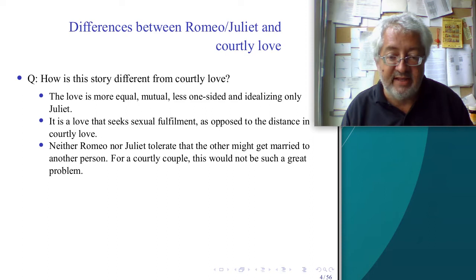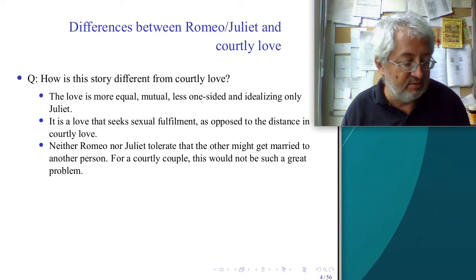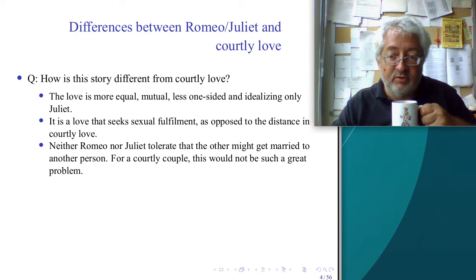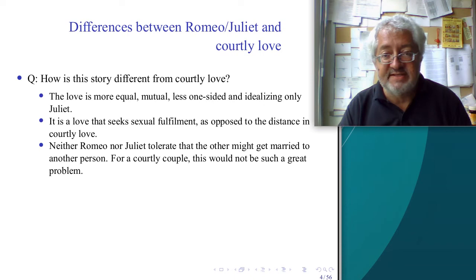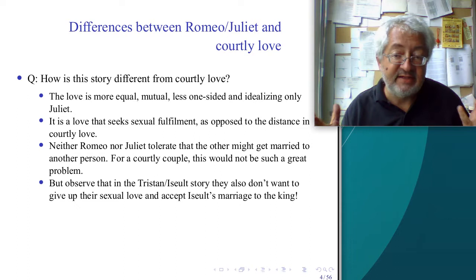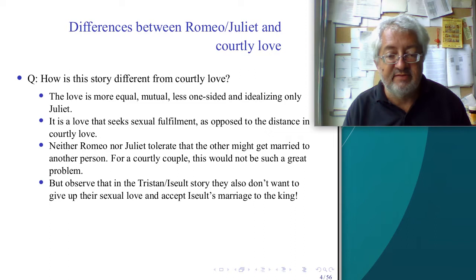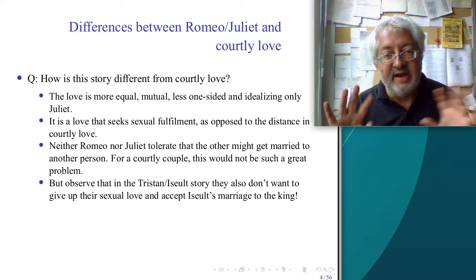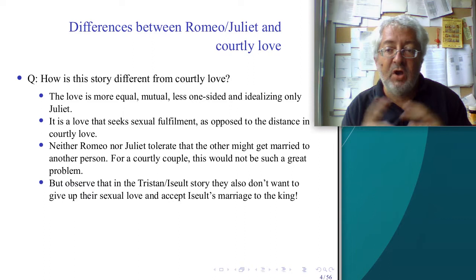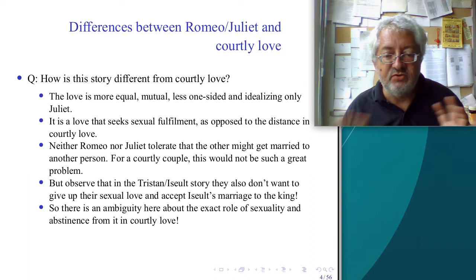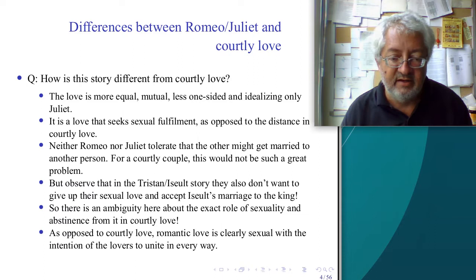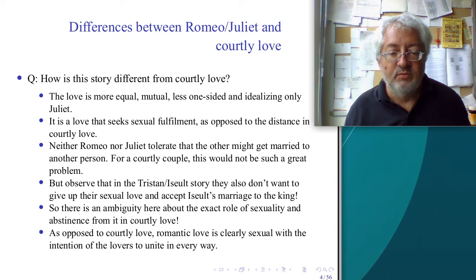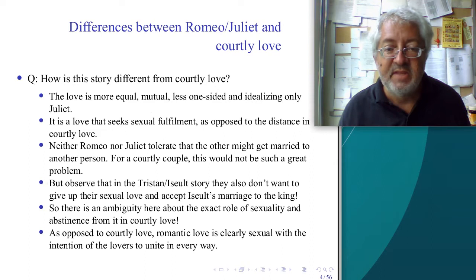Neither Romeo nor Juliet can tolerate the other getting married to another person. For a courtly couple this would not have been such a great problem — courtly love was all about being the admirer of someone who is married. Not here; they don't accept being married off to somebody else. There are some similarities to the Tristan and Isolde story — they also don't want to give up their love — but as opposed to courtly love, romantic love is clearly sexual, with the intention of the lovers to unite in every way including sexually.